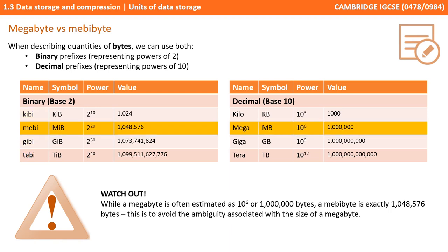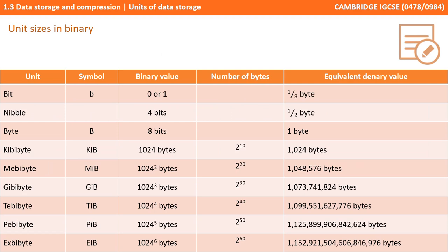While a megabyte is often estimated as a million bytes, a mebibyte is exactly 1,048,576 bytes. This is to avoid the ambiguity with the size of megabytes. Now that we understand that subtle difference, here's the actual table you need to be aware of for your exam, along with the correct names, spellings, and shorthand notation. For example, a mebibyte should be represented as capital M, small i, capital B. You're not going to need to remember the exact equivalent denary values in the right-hand column. Just remember that when thinking about computer science, although people might say kilobyte, what they actually mean in computer science terms is kibibyte.